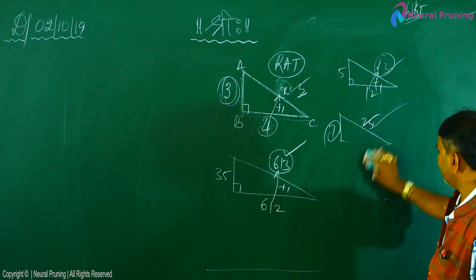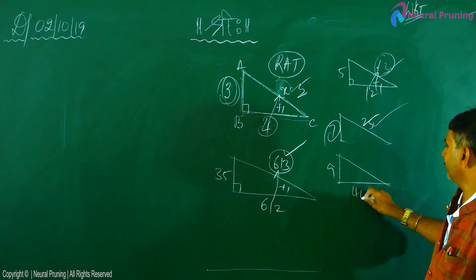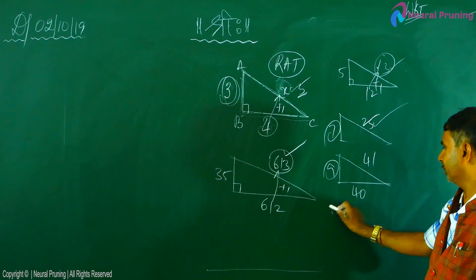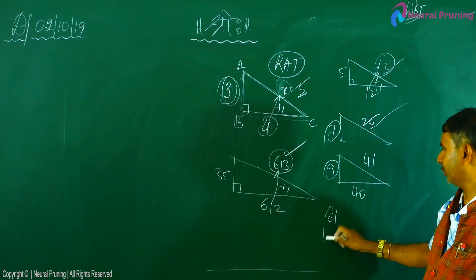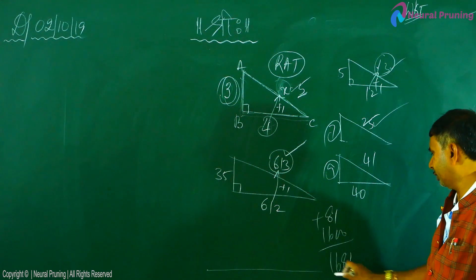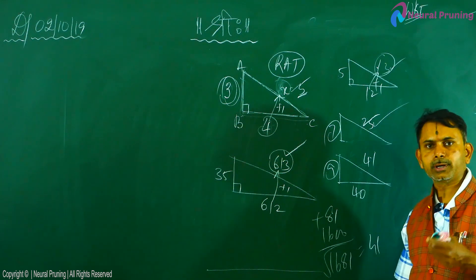One student asked, sir, this is okay. Suppose it is nine, it is forty. It is forty-one. Check. Nine square is what? Eighty-one. Forty square is what? One thousand six hundred. On addition, one thousand six eighty-one. Under root becomes forty-one. Pakka. Pythagorean triplets are generated.